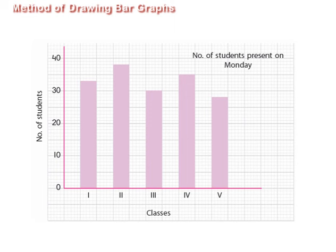The horizontal axis represents classes and the vertical axis represents number of students present. Suppose on the vertical axis one small division represents one student.